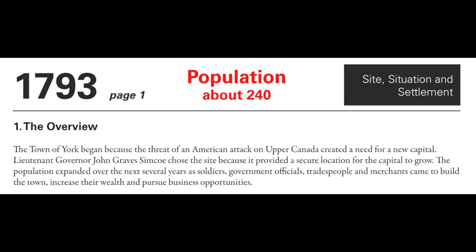The town of York began because the threat of an American attack on Upper Canada created a need for a new capital. Lieutenant Governor John Graves Simcoe chose the site because it provided a secure location for the capital to grow.